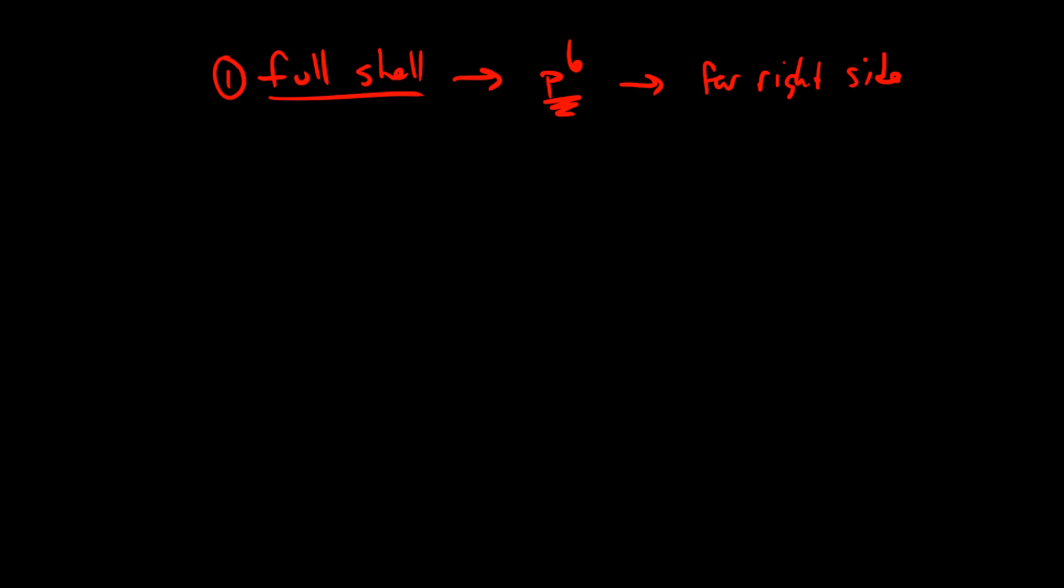The next most stable would be if we have a full subshell, and especially we're talking about a full D subshell. A full D subshell would be D10. This is particularly a stable full subshell configuration. Having a full P clearly gives us the full shell, so that's even more stable. And having a full S, which would be S2, it's favorable but not as amazing as D10. So having a full subshell, especially D10.